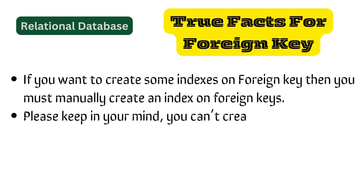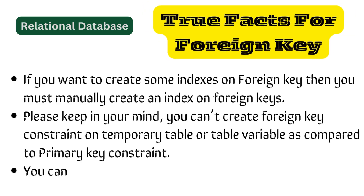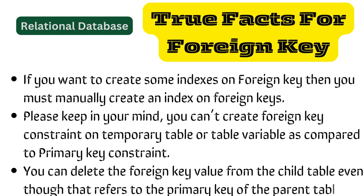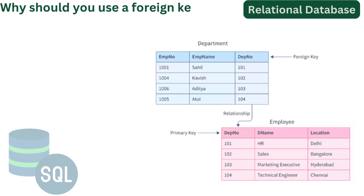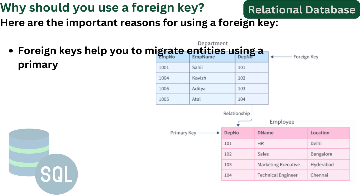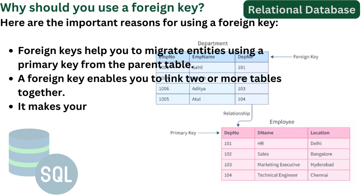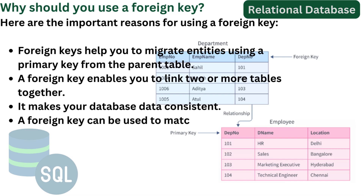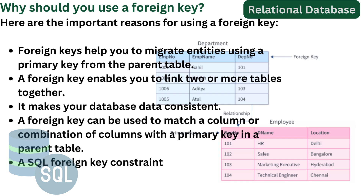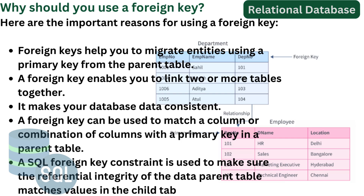Please keep in mind: you can't create a foreign key constraint on a temporary table or table variable, unlike a primary key constraint. You can delete the foreign key value from the child table even though it refers to the primary key of the parent table. Here are important reasons for using a foreign key: foreign keys help you to migrate entities using a primary key from the parent table; a foreign key enables you to link two or more tables together; it makes your database data consistent; and a foreign key can be used to match a column or combination of columns with a primary key in a parent table. A SQL foreign key constraint is used to ensure the referential integrity of the data so that the parent table values match values in the child table.